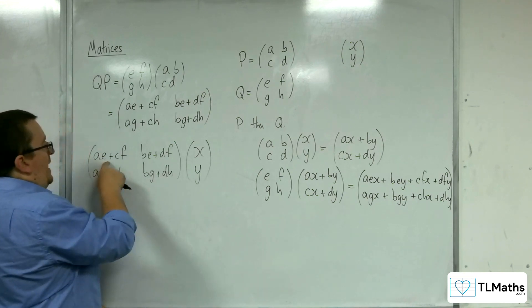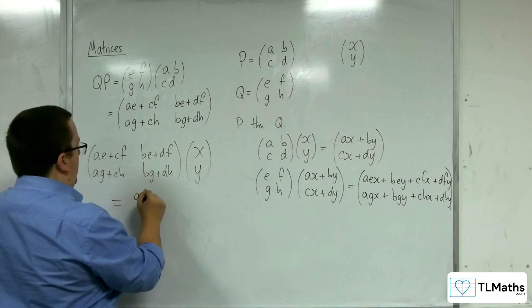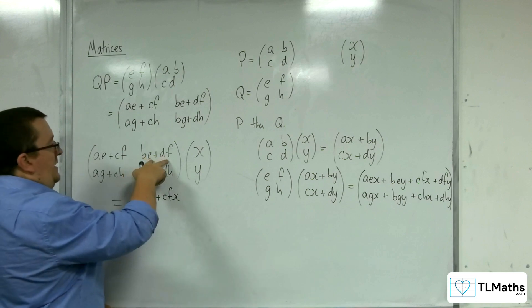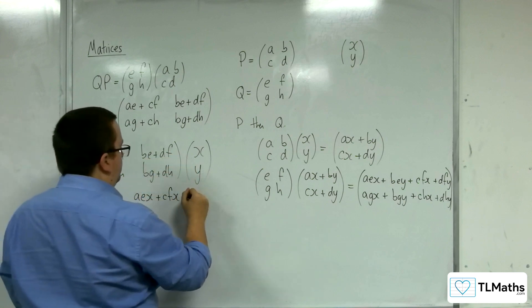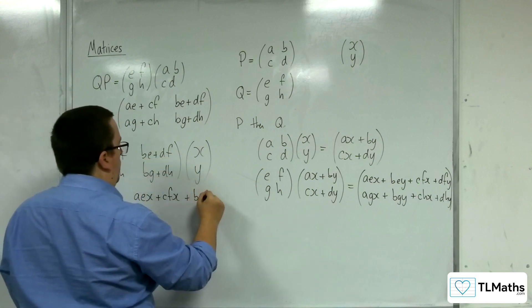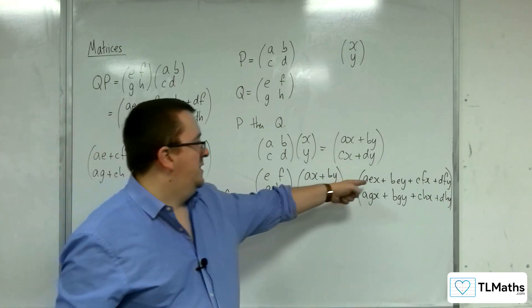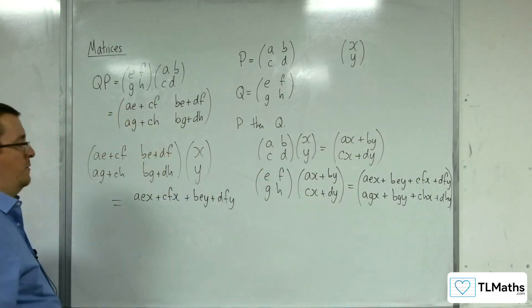So we've got A, E plus C, F multiplied by the X. So that would be A, E, X plus C, F, X. And then B, E plus D, F, multiplying with the Y. So plus B, E, Y plus D, F, Y. And you can see that that is precisely what I've got in the top row there.